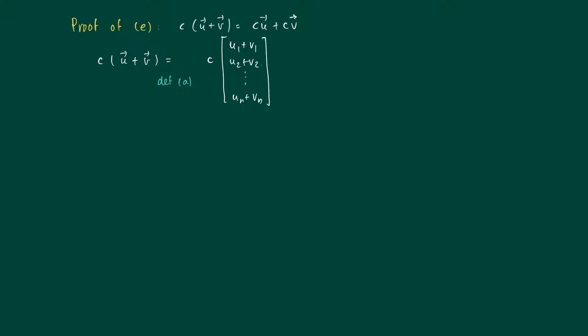Then property a in the definition of the sum says that we take this as component. Now the scalar multiplication says that c times the vector that we have here is the vector where each coordinate is multiplied by c. So it's the definition b of scalar multiplication.